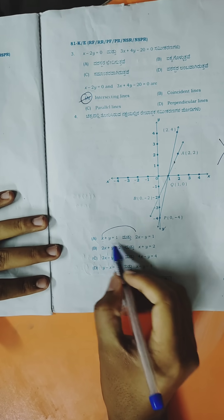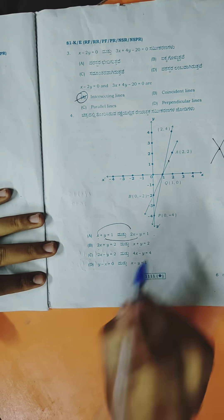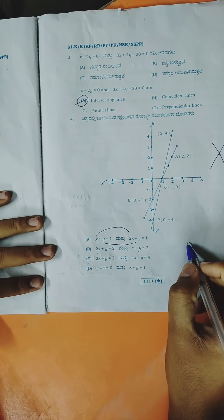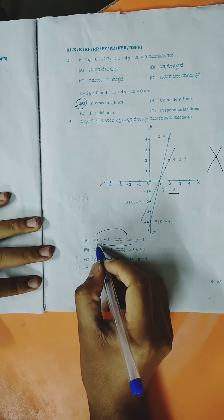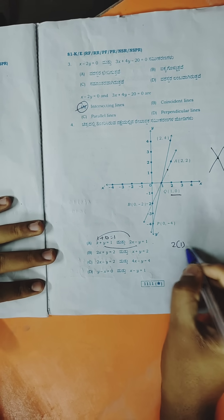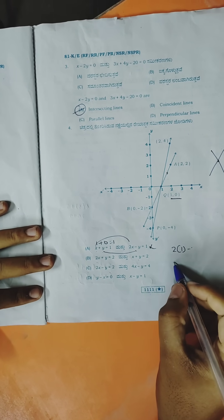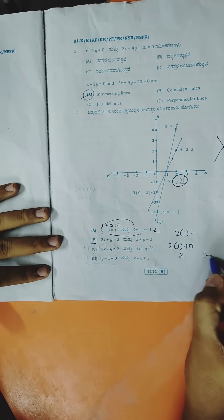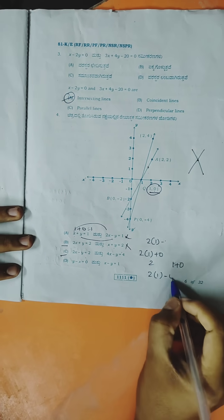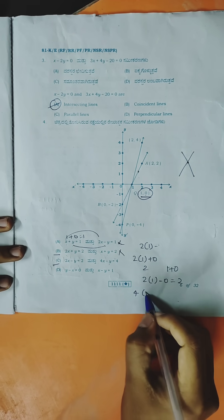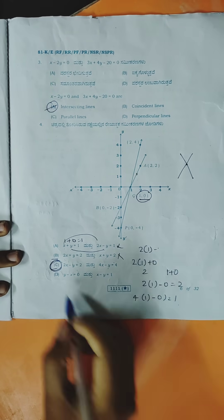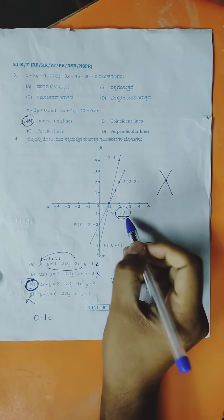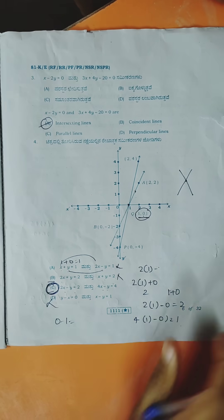Substituting point (1, 0) into the options to check: 1 plus 0 = 1 satisfies one equation, and checking the second gives 2(1) − 0 = 2. After elimination or direct substitution, option C is the right answer. Just put the point of intersection to verify.